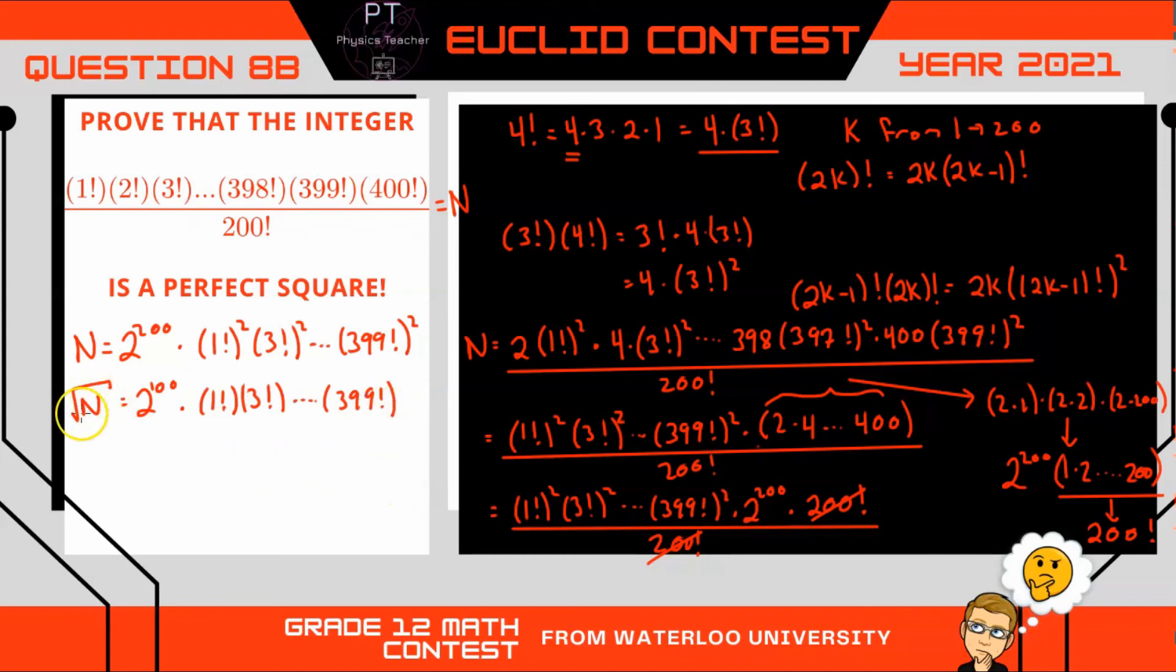Well since the square root of n is the product of all these integers, then that means the square root of n is itself an integer, which means n is a perfect square.